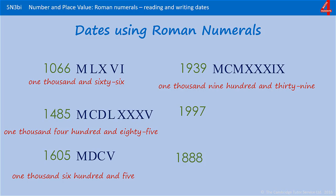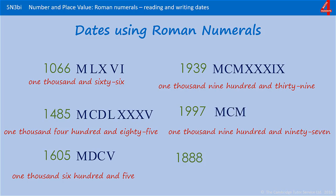The next date, 1997 — that was the last time the UK won the Eurovision Song Contest. We have 1000 and 900, then 90, which is 10 less than 100, and 7.